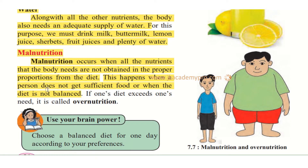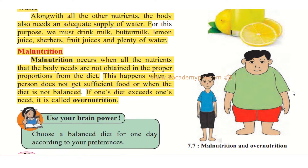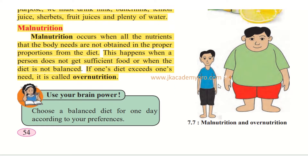If one's diet exceeds one's need, it is called overnutrition. Here are two pictures showing malnutrition and overnutrition. Some people keep on eating, and that is also not good — you may suffer from overnutrition.